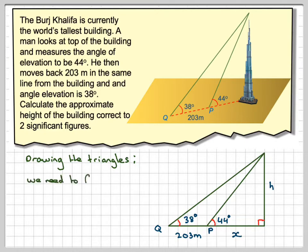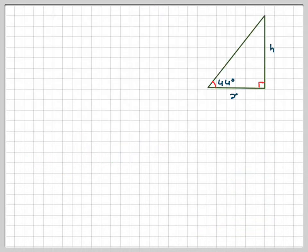We have one thing to find, which is h, but we have two unknowns, so we'll probably need two equations in order to solve them. Drawing out the smaller triangle first and then doing a little bit of trigonometry on that.